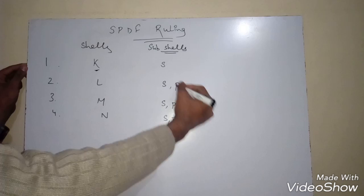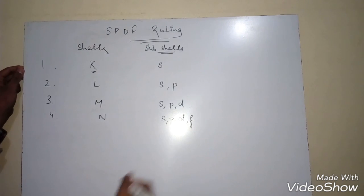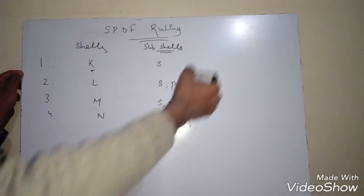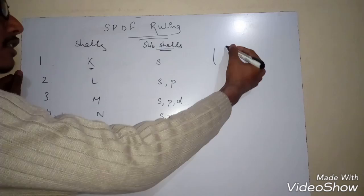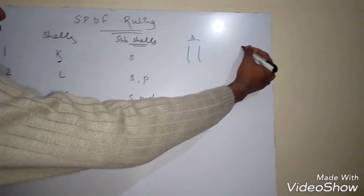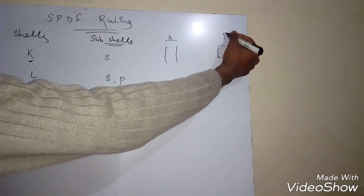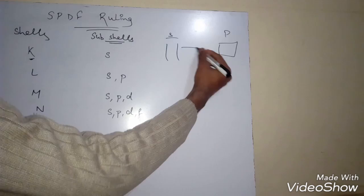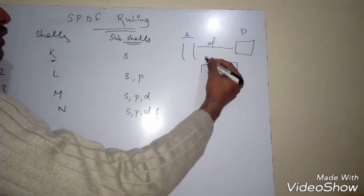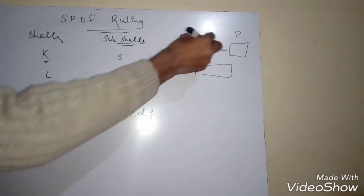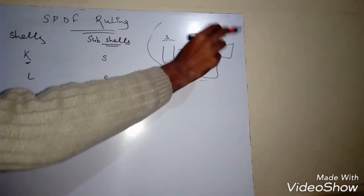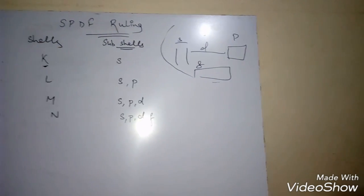Here S, P, D, and F are certain blocks. If you look at the periodic table, the first block contains S, then P, the middle one is D, and finally F. These are subshells, but they also correspond to the blocks in the periodic table.